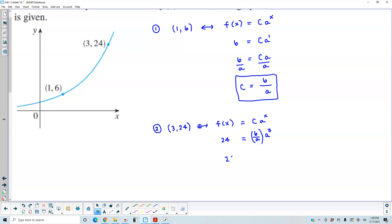So now this becomes 24, which is equal to 6a cubed over a. And we can simplify the a cubed over a. And that becomes 6a squared.